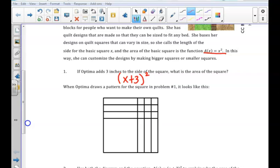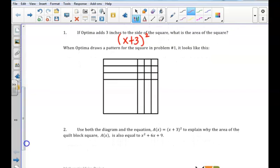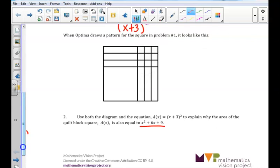We are then asked to use the diagram provided and the equation A(x) to explain why the area of the quilt block can also be written as x² + 6x + 9. If we refer to the diagram, we can determine that this is an x by x square, so the area of the square in the bottom left is x². Each rectangle represents a length of x by one, so each rectangle has an area of one x. So the area of the entire diagram would be x² plus we have six x's, and we have a three by three, nine constants. So we can write the area as x² + 6x + 9.